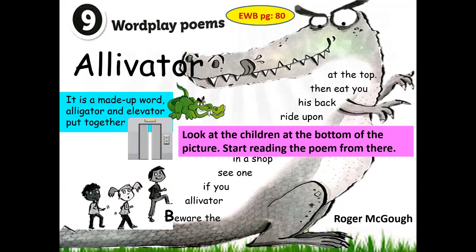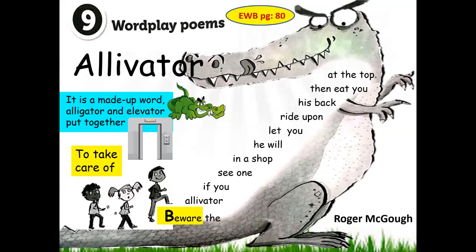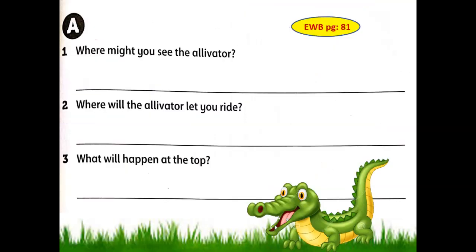Look at the children at the bottom of the picture. Start reading the poem from there. Beware — let us all read it together. Beware the elevator if you see one in a shop. He will let you ride upon his back and then eat you at the top. This is a real dangerous elevator! Where might you see the elevator? In a shop.